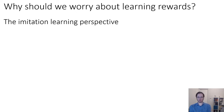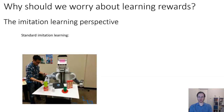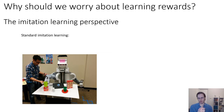That's maybe the more intellectual motivation, but we could also ask a practical question: why should we worry about learning reward functions? One perspective is the imitation learning perspective. A standard way to go about imitation learning problems, as we discussed in the beginning of the course, would be to demonstrate a behavior that you want to a robot, an autonomous car, an e-commerce agent, or whatever it is, and have it simply imitate that behavior through behavioral cloning.